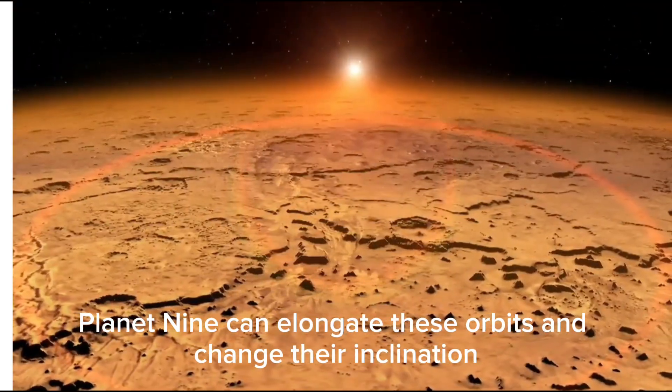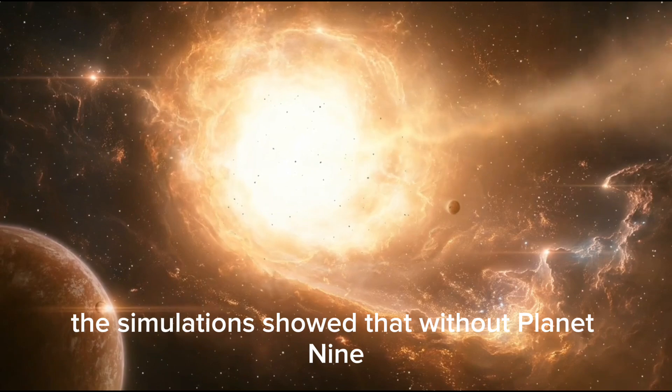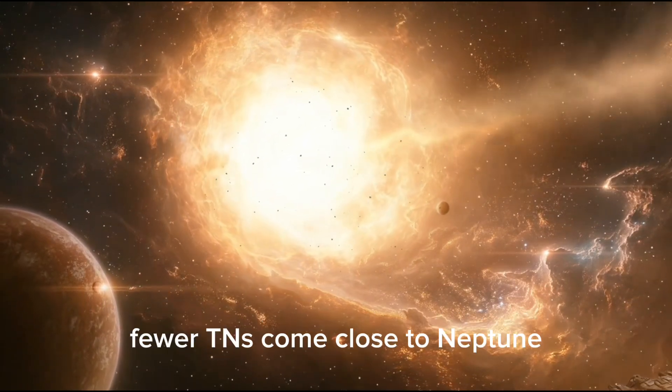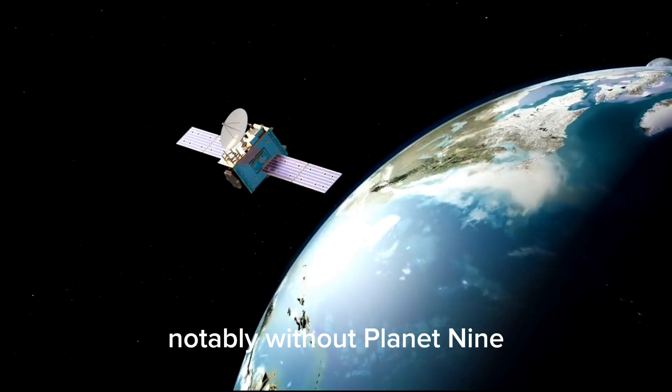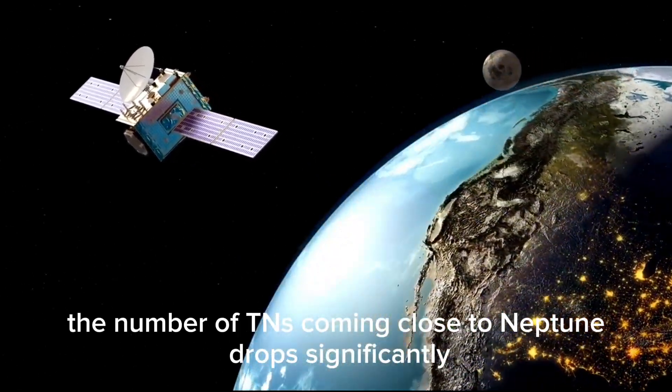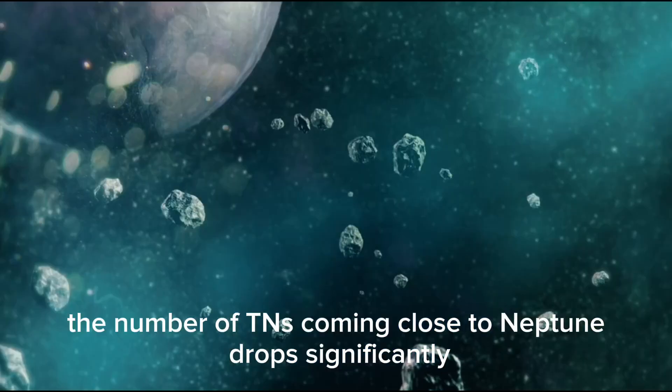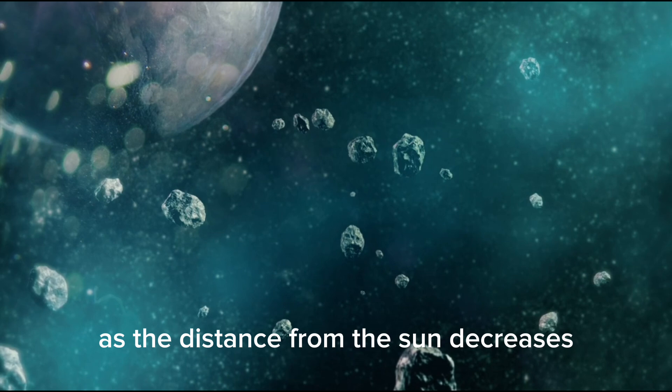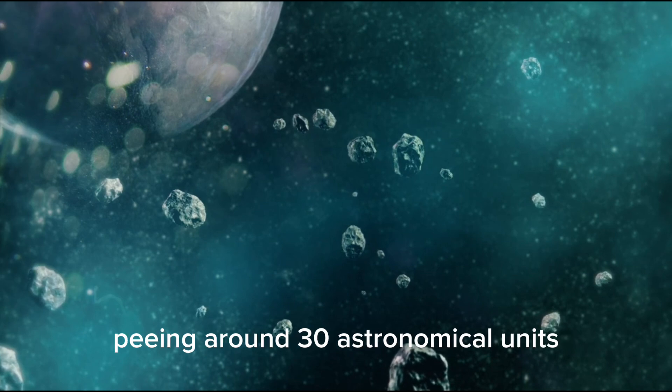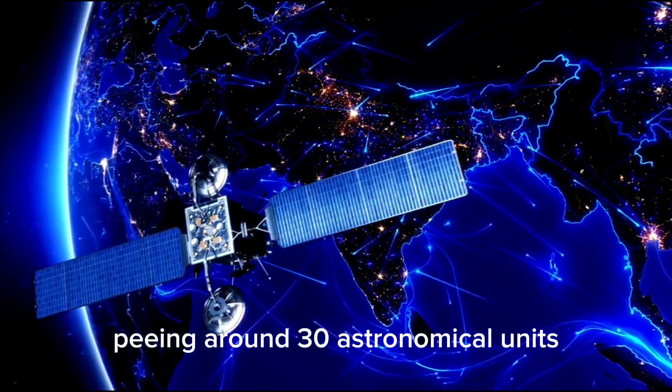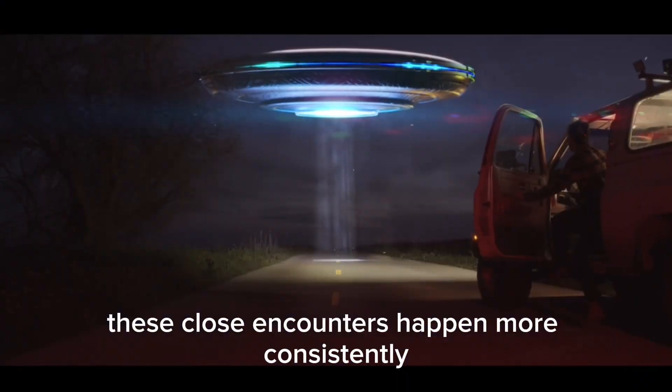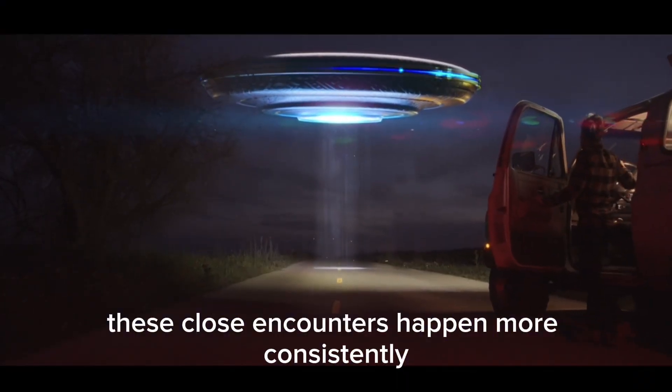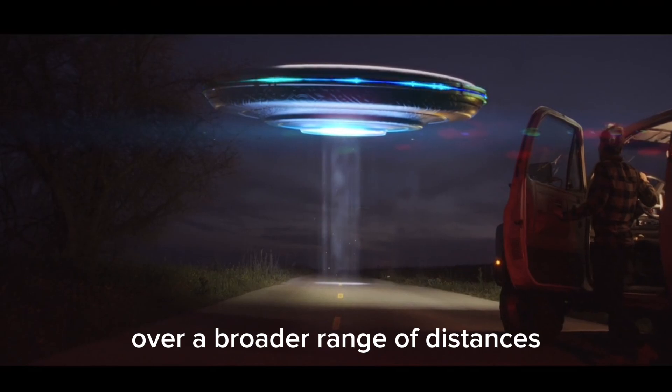The simulations showed that without Planet 9, fewer TNOs come close to Neptune. Notably, without Planet 9, the number of TNOs coming close to Neptune drops significantly as the distance from the sun decreases, peaking around 30 astronomical units. Conversely, with Planet 9, these close encounters happen more consistently over a broader range of distances, starting from around 16 astronomical units.